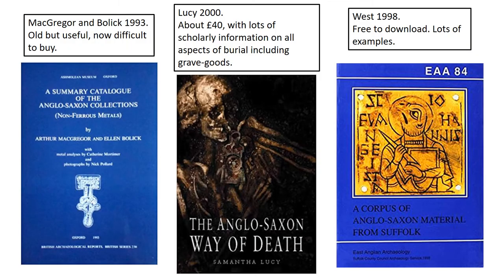Here are some good general reference books for early Anglo-Saxon brooches. McGregor and Bolick is still perhaps the best general book, with references to all research up to 1993, summaries and lots of pictures. The volume by Samantha Lucy is fairly expensive but a reliable scholarly reference with lots of background. The volume on the right is free to download and has lots of very good images for reference. There are lots of other books, so do ask your finds liaison officer and also see our online guide for more recommendations.